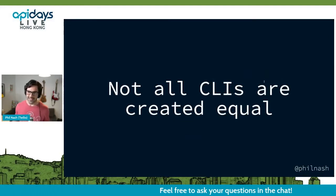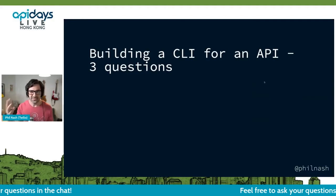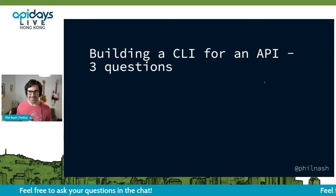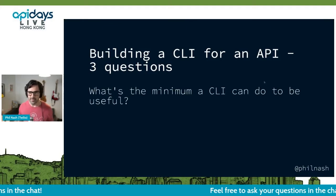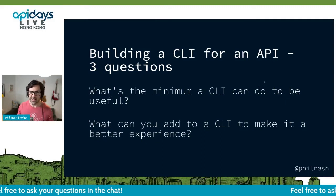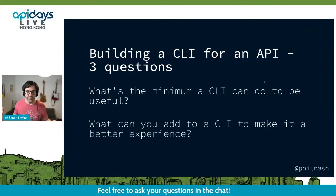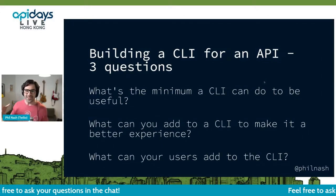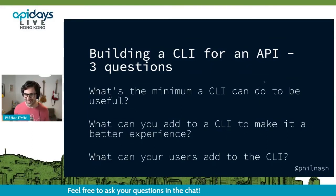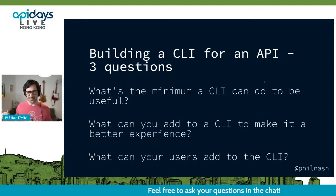So I want to talk about how we can make a great developer experience, because not all CLIs are created equal. There were three questions we faced when building the CLI. First: what's the minimum a CLI can do for an API to be useful? Second: what can you then add to that CLI to make a better experience? And finally, almost most importantly to me: what can your users add to the CLI as well? Maybe that's important to me because if you're building a new API, perhaps the top two are the most important to start with.